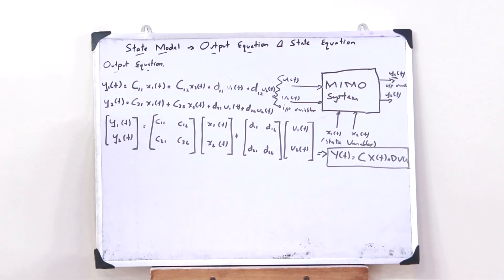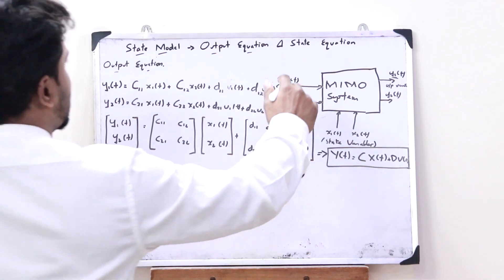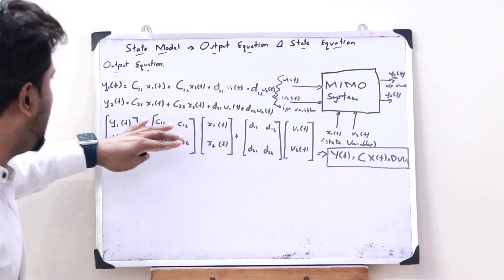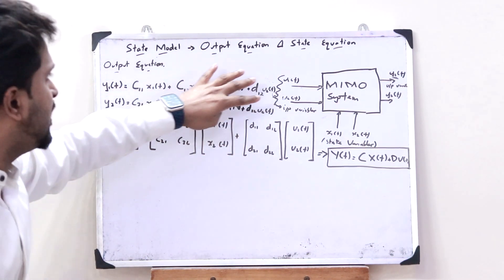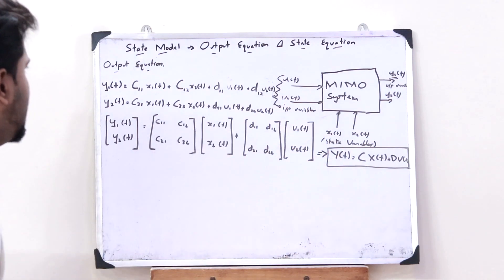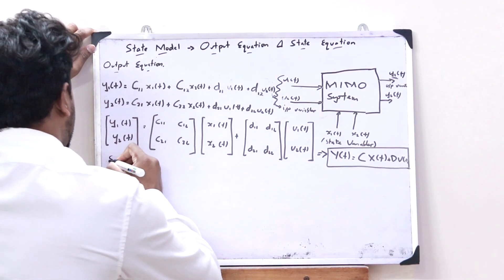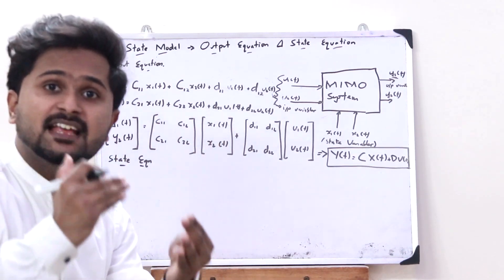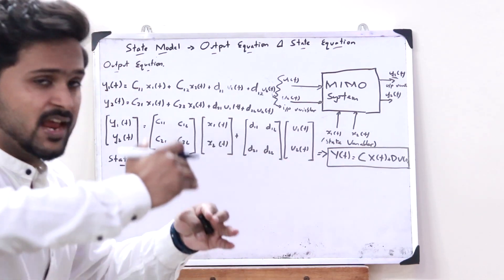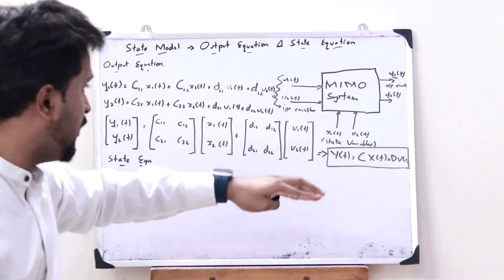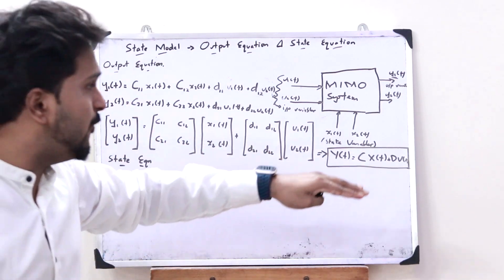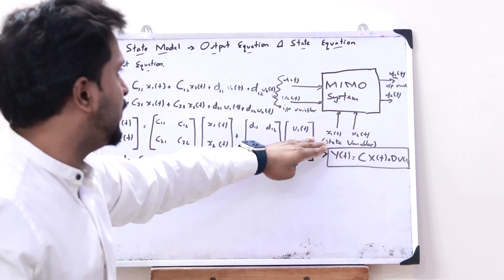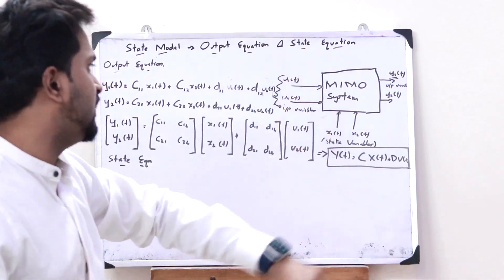Similarly, we can now find the state equation. In the output equation we found the relationship between output variables and the input and state variables. In the state equation, we find the relationship of the first derivative of the state variables — d/dt of X1(t) and d/dt of X2(t) — with the input variables and state variables.